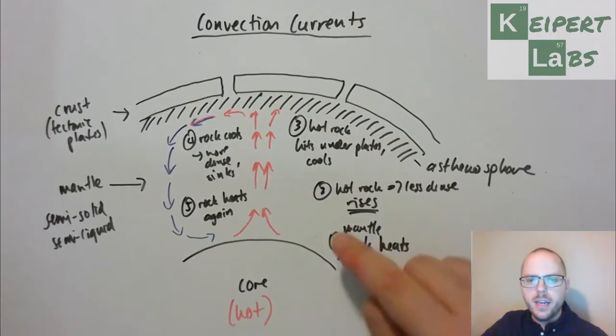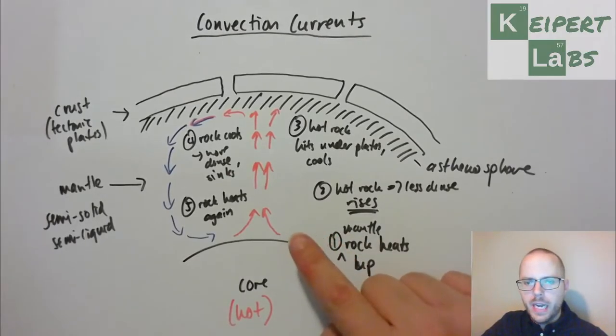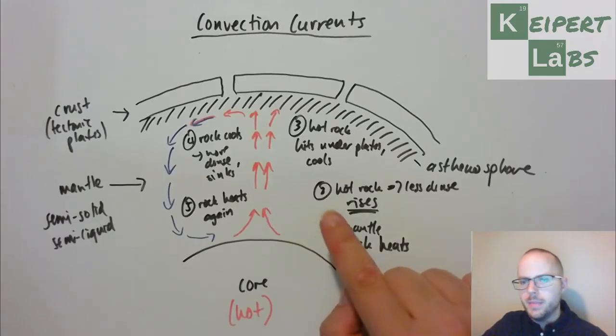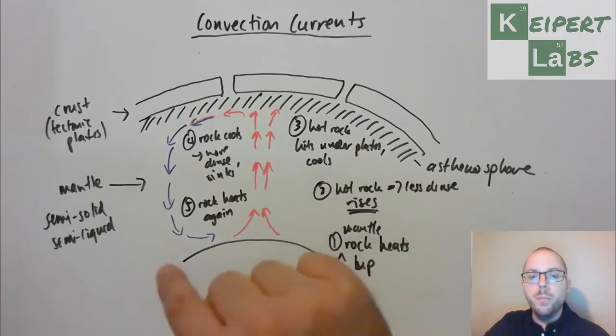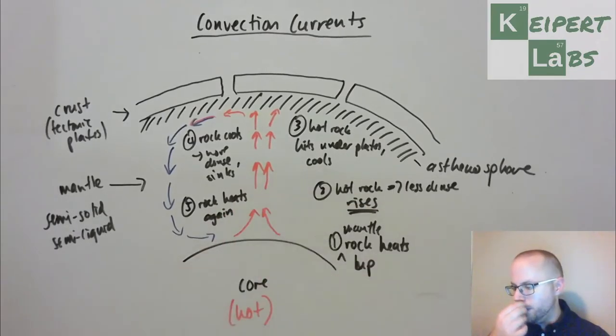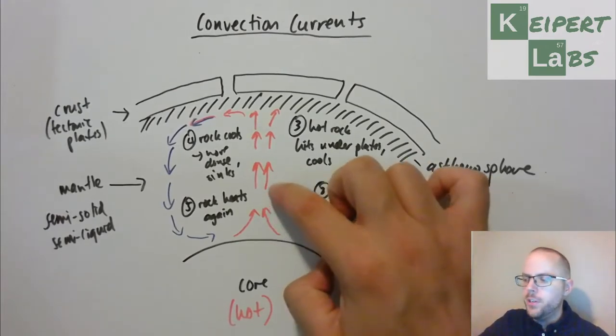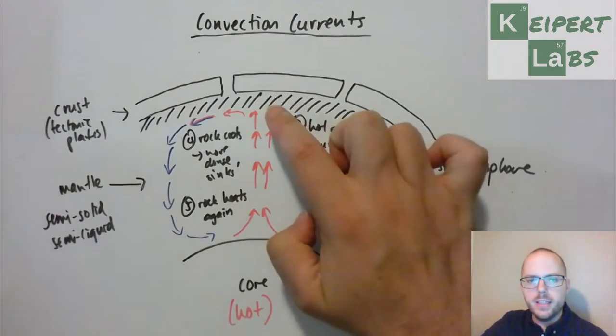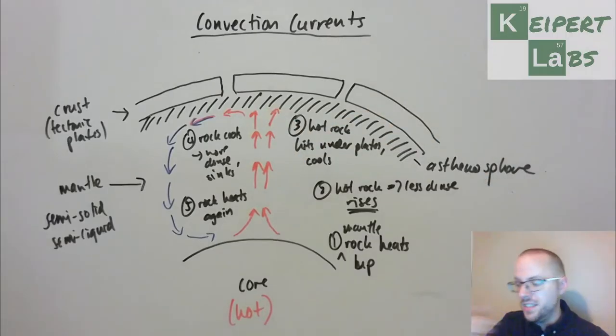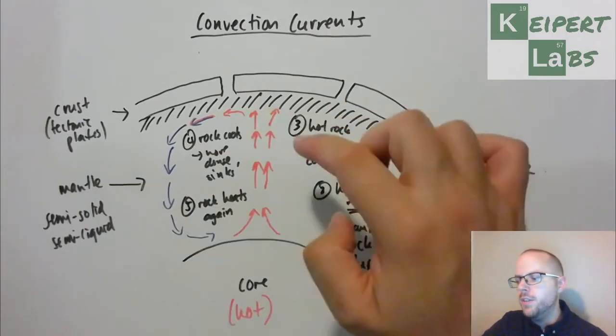So we've got these five stages. The rock starts out here, down at the bottom near the core, it heats up. As it gets hotter, it becomes less dense, and it rises up through the mantle. Because it's liquid, it's able to move. It's not stuck in this solid state where it's much more restricted.